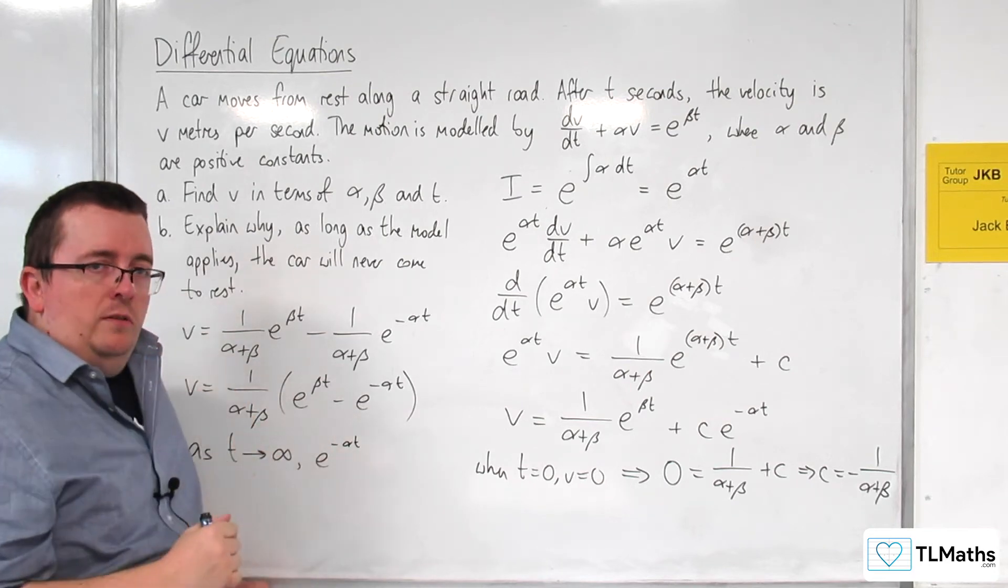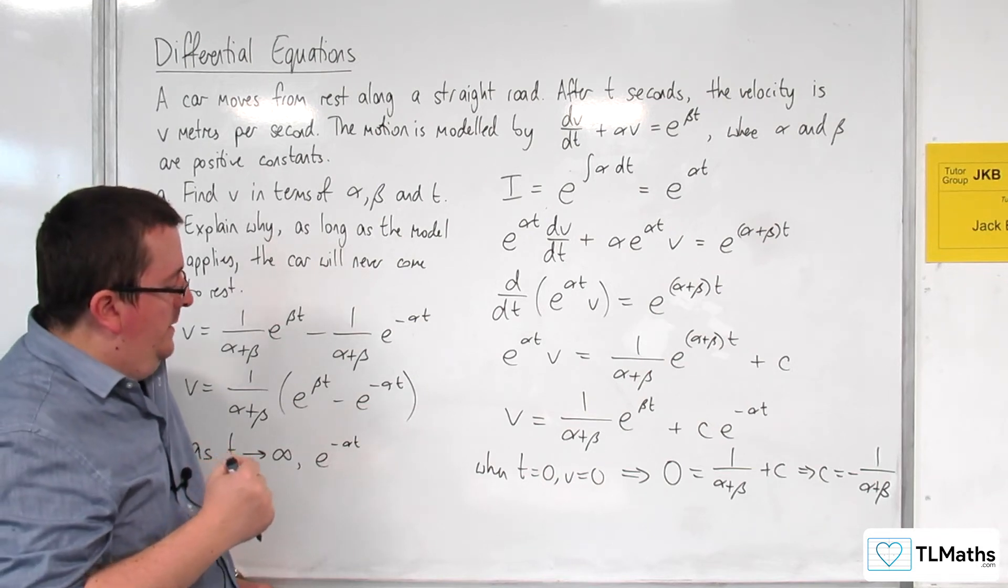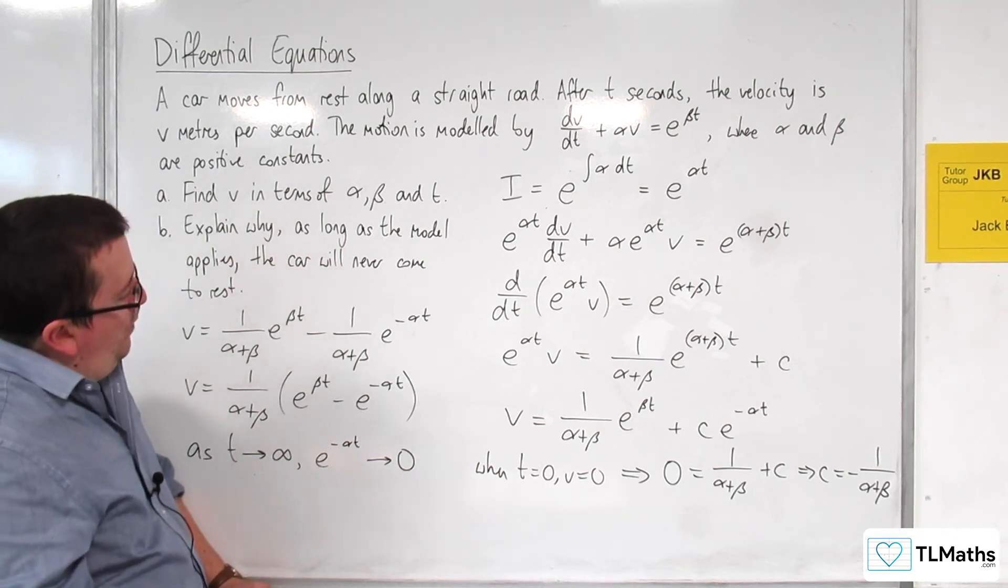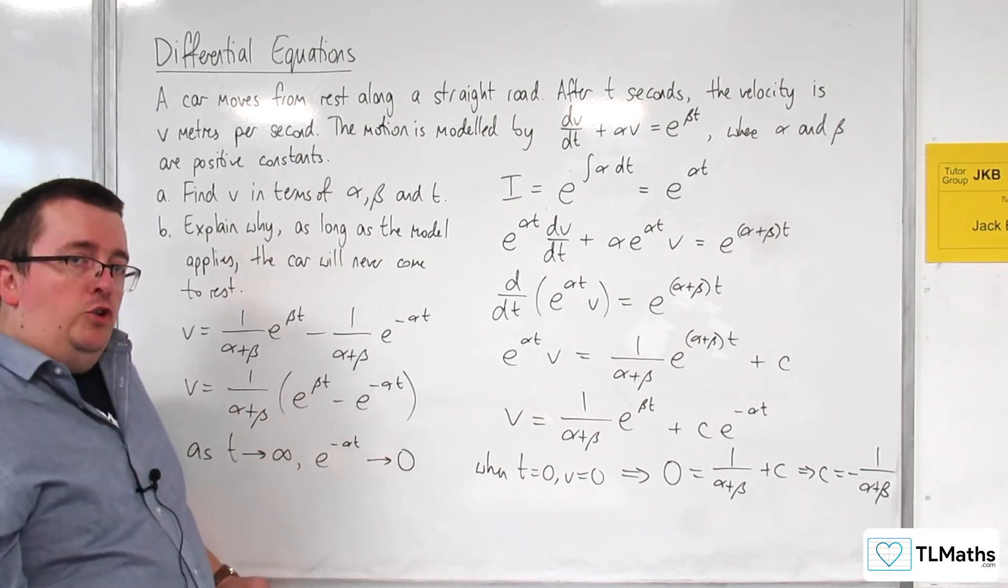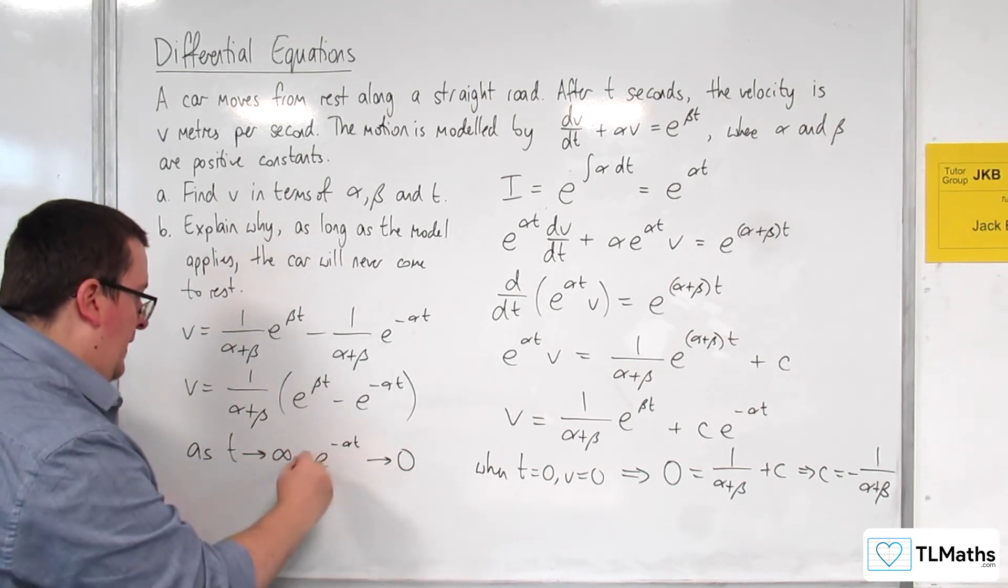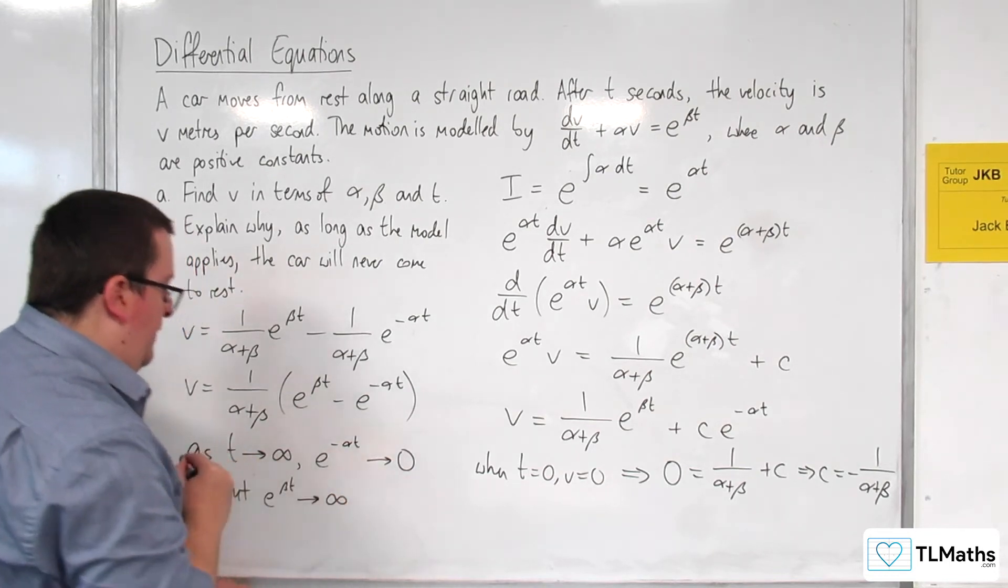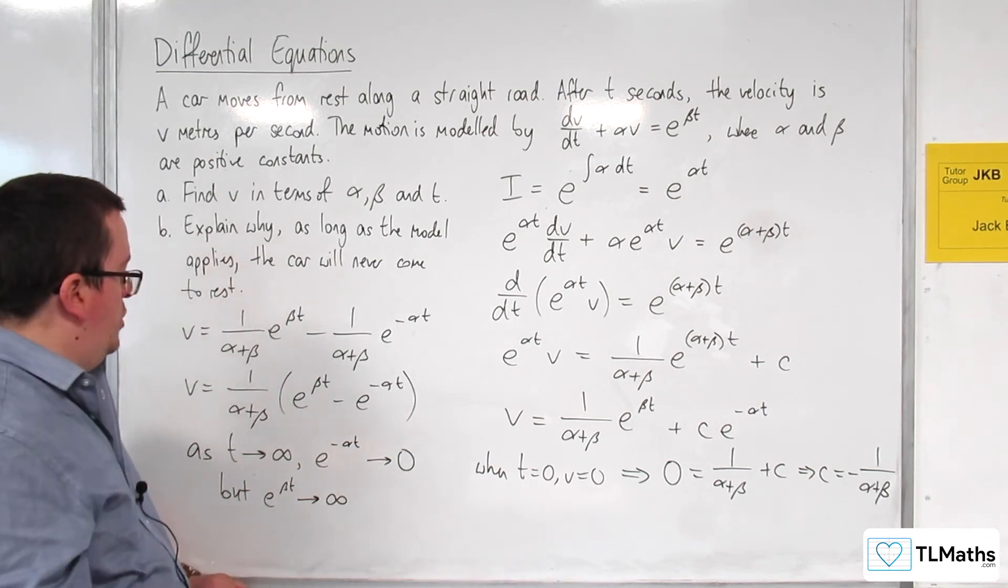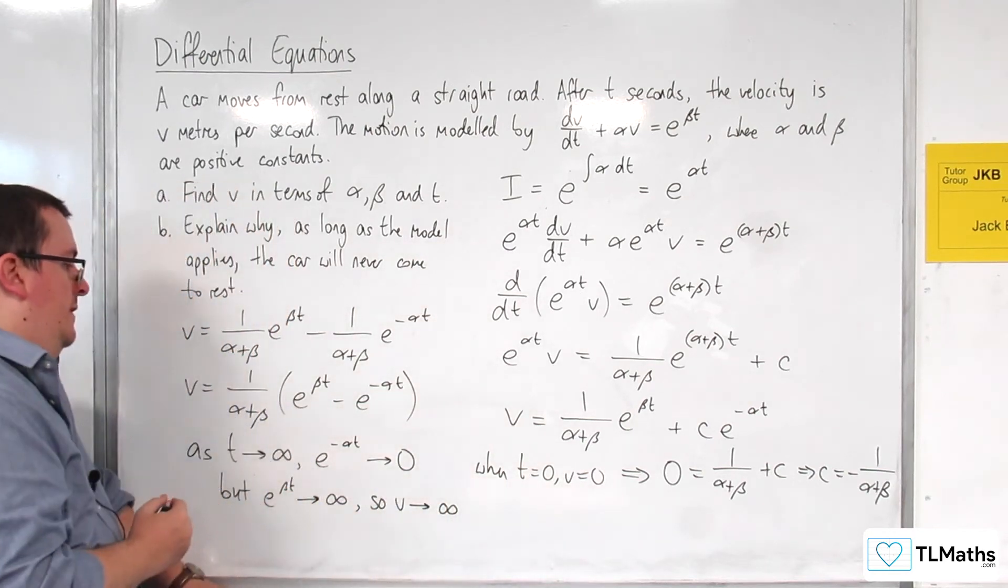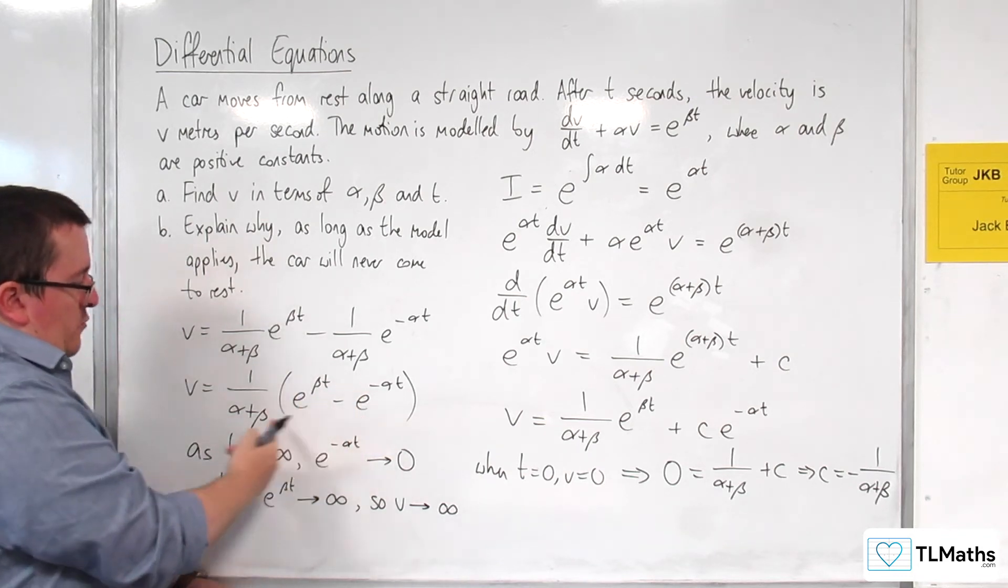E to the minus α times t, and t is increasing, that means that this is going to tend to 0. So that's going to get smaller and smaller. Whereas, the e^(βt) will get larger and larger. So that tends to 0, but e^(βt) will tend to infinity. So v tends to infinity as t tends to infinity.